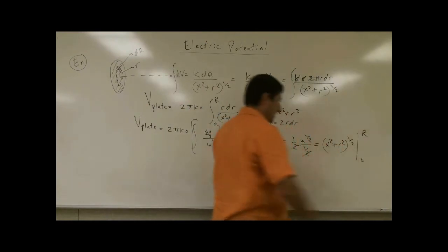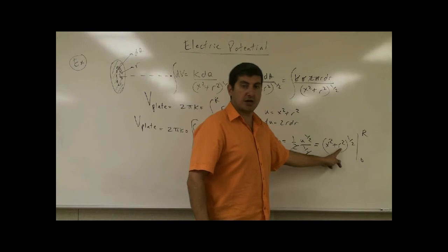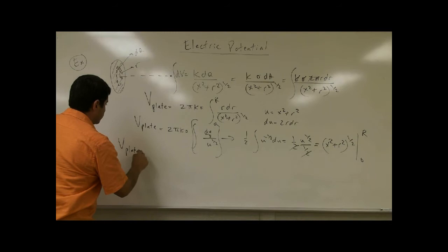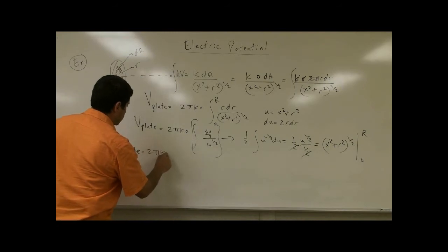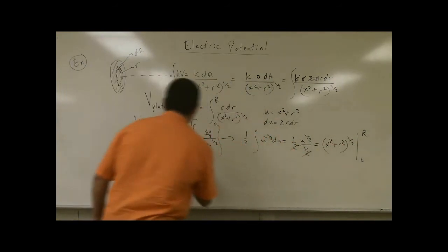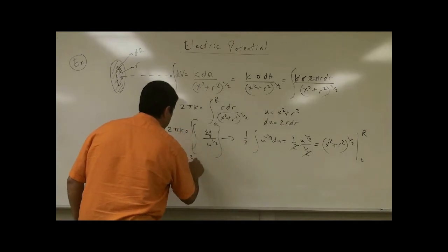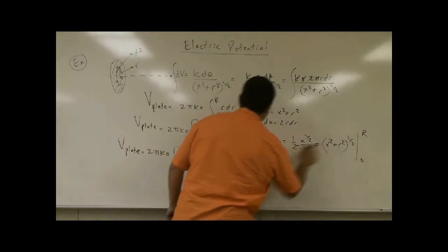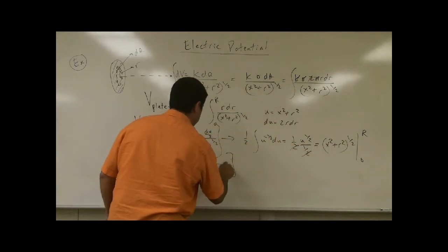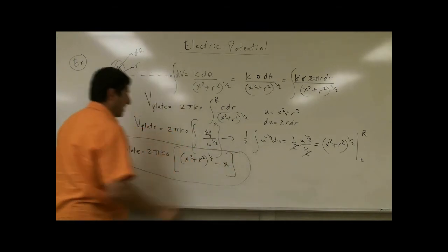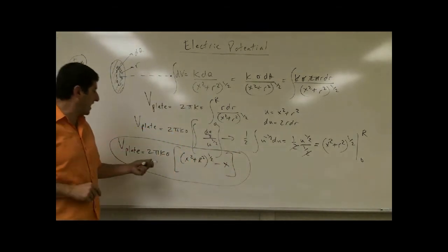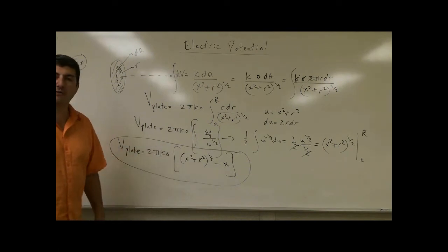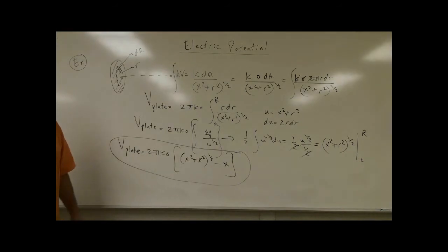Remember that you're putting the big R into the little r, not the x. So the potential of the plate comes out to be 2 pi k sigma. Putting in R, you get the square root of x squared plus R squared, and putting in 0 you just get x. So V equals 2 pi k sigma times the square root of x squared plus R squared minus x. If I want to, I could also substitute sigma equals q over pi R squared to get an expression in terms of the radius.